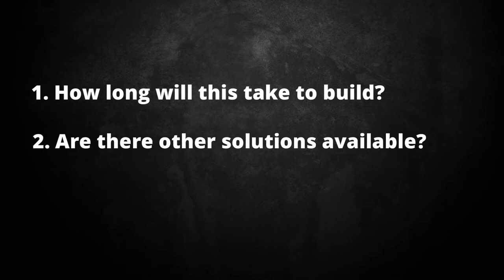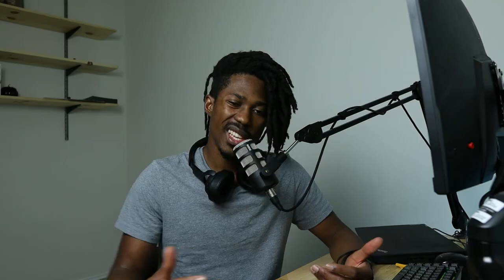The next thing I want to talk about is honesty and being unambiguous. You might get questions like: how long will this build take, are there other solutions available, what are the updates for user story 1-2-3? These usually come from a project manager or scrum leader. If you're answering with 'I don't know,' 'there might be,' or 'going well, no blockers,' that leads the team to believe you're zoning out or not doing your work — you're perceived as unreliable.